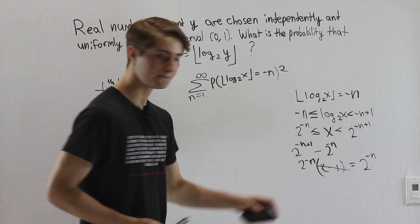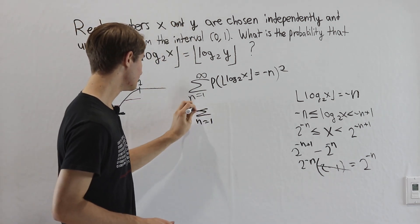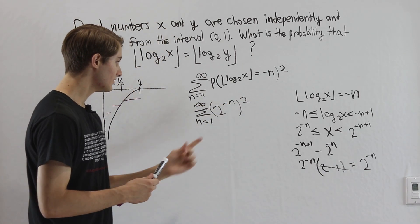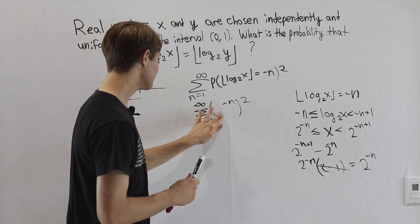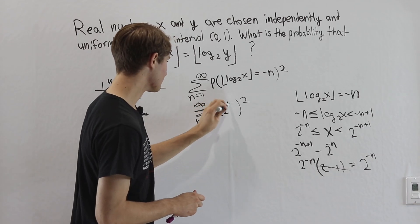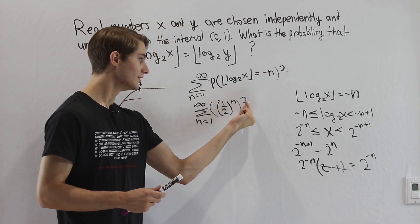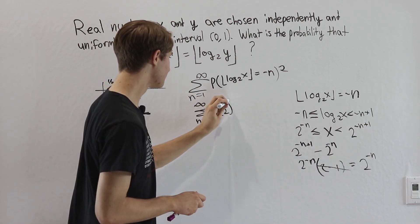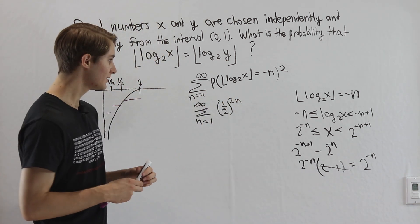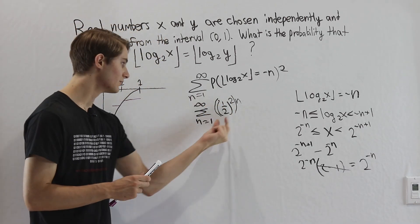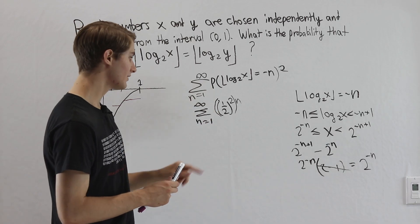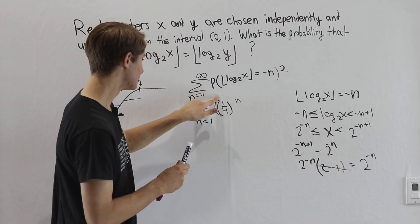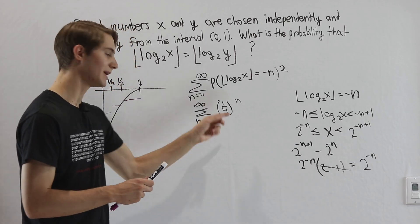Writing that into our equation, we have the sum from n equals 1 to infinity of 2 to the negative n, squared. Rewriting 2 to the negative n as one half to the n, we get the sum of (one half to the n) squared. Bringing the 2 inside the power gives one half to the power of 2n, which equals one quarter to the power of n. So we need the sum from n equals 1 to infinity of one quarter to the n.